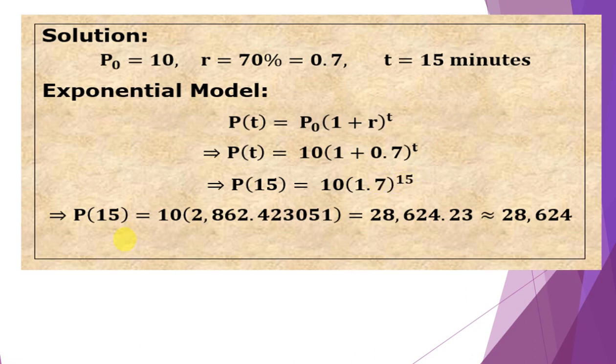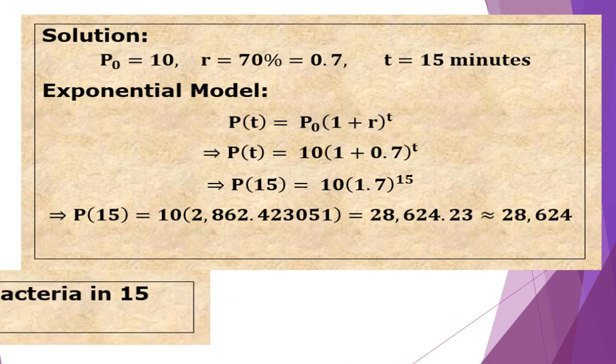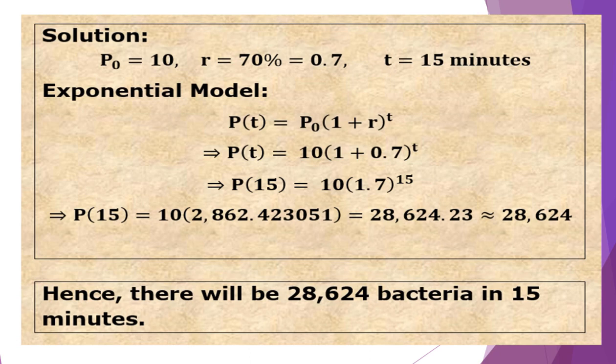So solving it, we have 10 × 1.7¹⁵, which gives us 2,862.423051, or just rounded off to the nearest integer, we have 28,624. Hence, there will be 28,624 bacteria in 15 minutes.